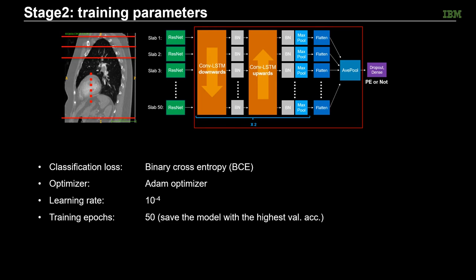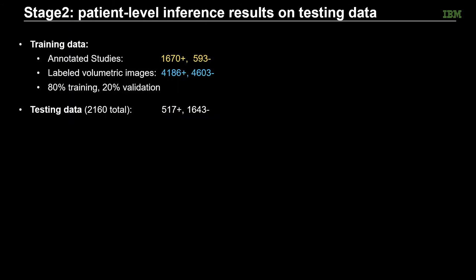Here we show some of the training parameters. In stage 2, we only need to use the classification loss, specifically binary cross entropy loss. We chose the Adam optimizer. We train our network for 50 epochs and save the model with the highest validation accuracy. In stage 2 training, the training data actually contains two parts. The first part is the more than 2,000 annotated studies used in stage 1, but here we only use them as labeled volumetric studies. In addition, we also have more than 8,000 labeled volumetric images, where more than 4,000 of them are positive studies and more than 4,000 are negative studies.